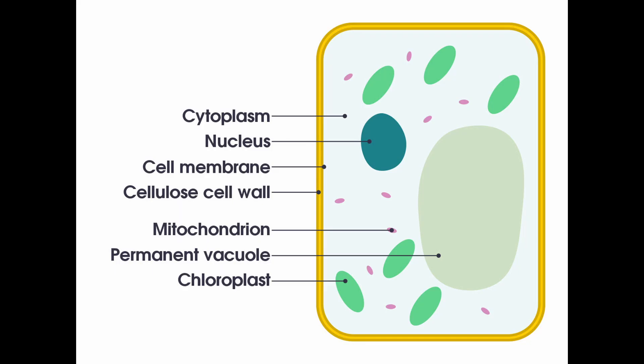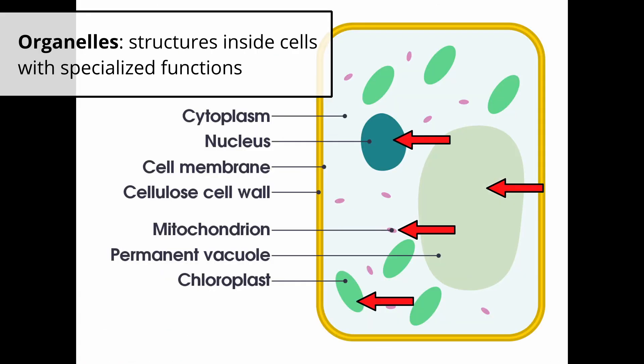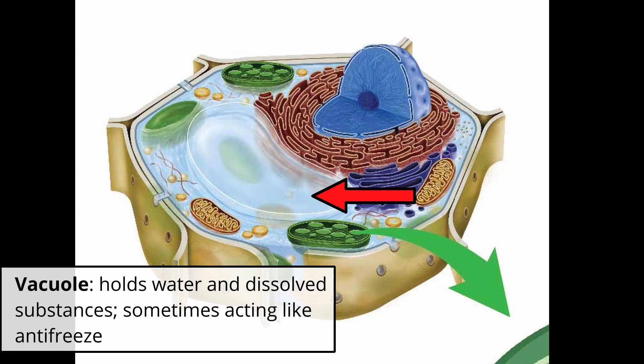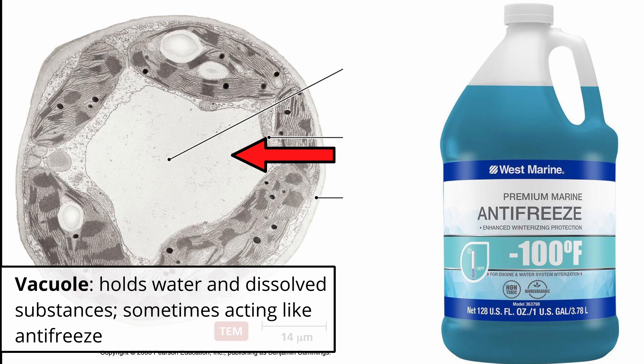Let's take a look at this diagram of a basic plant cell. Plant cells can vary depending on their function, but you have individual structures inside the cell called organelles. This organelle in the center here is called a vacuole. It holds water which helps to keep plants hydrated and it contains dissolved minerals which can help act like an antifreeze in cold weather.